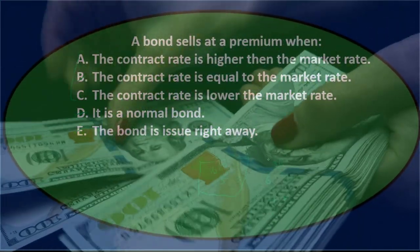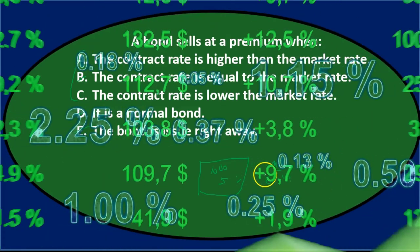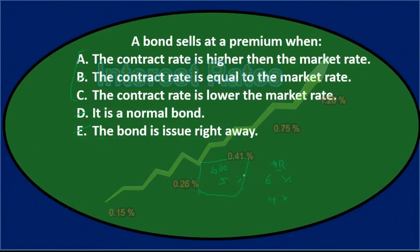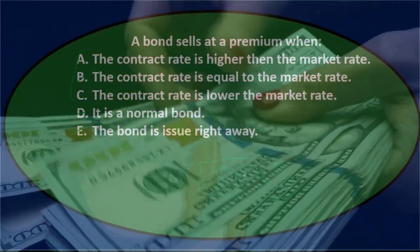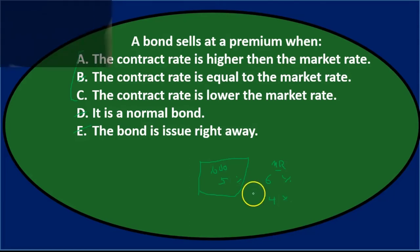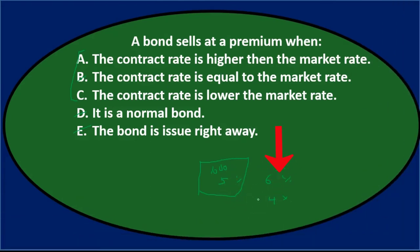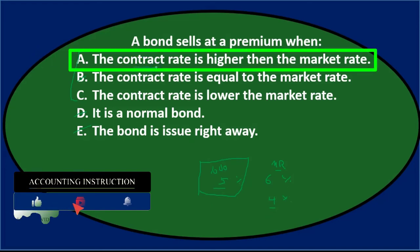Think it through: if I have a thousand-dollar bond paying five percent and the market rate is six percent, I can get a better return elsewhere, so I'd only buy this bond at a discount — less than a thousand dollars. On the other hand, if the bond pays five percent but I can only get four percent elsewhere, I'd be willing to pay more. The company will sell that bond at a premium, wanting more than the face value.